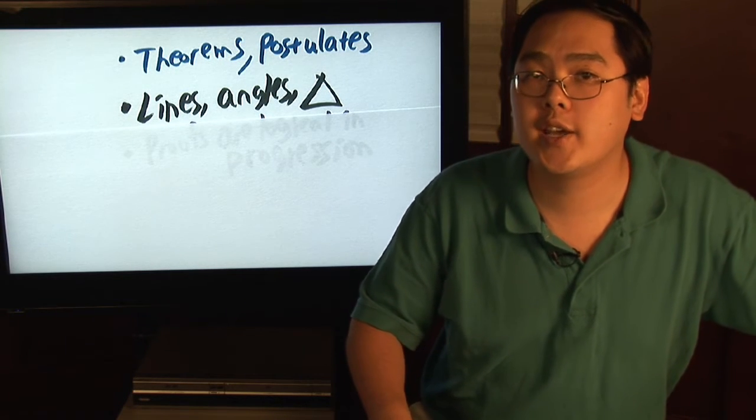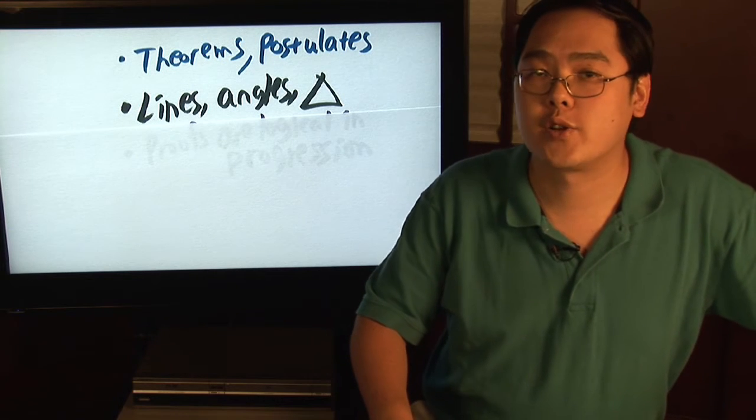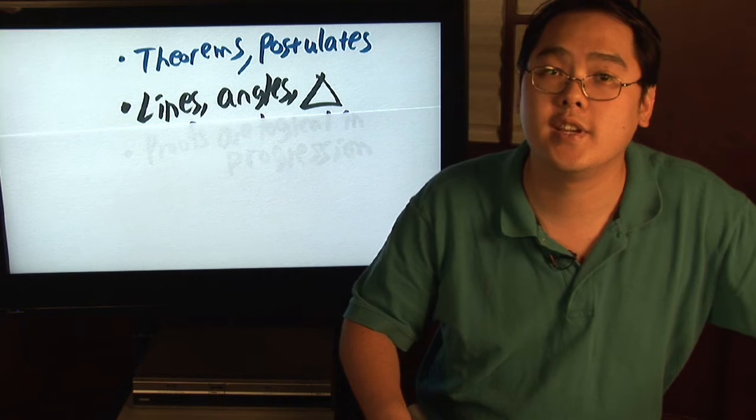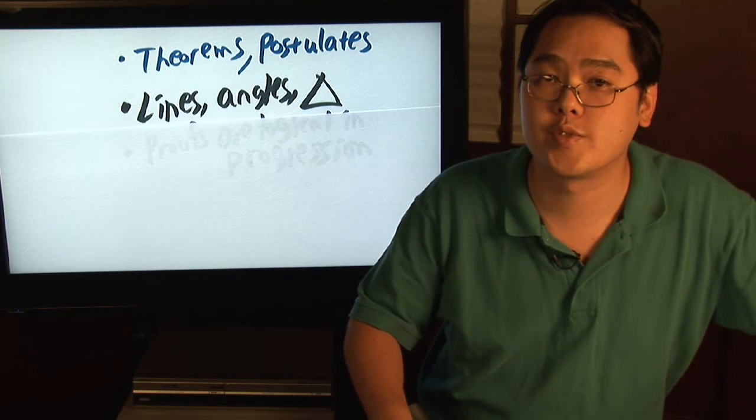Side, side, side. Angle, side, angle. Vertical angles are congruent. Those are just a few examples of those properties that you definitely will need to have handy when it comes to these proofs.